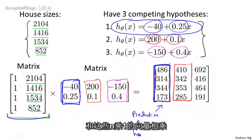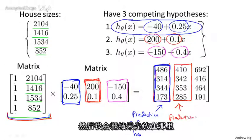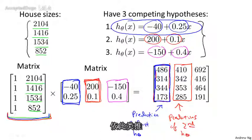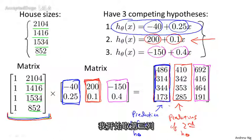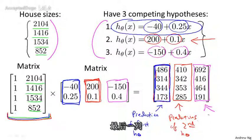The second column of the result is obtained by multiplying the data matrix by the second column of parameters, giving the predictions of the second hypothesis, and similarly for the third column. By constructing these two matrices, you can very quickly apply all three hypotheses to all four house sizes to get all 12 predicted prices output by your three hypotheses on your four houses. With just one matrix multiplication step, you manage to make 12 predictions.